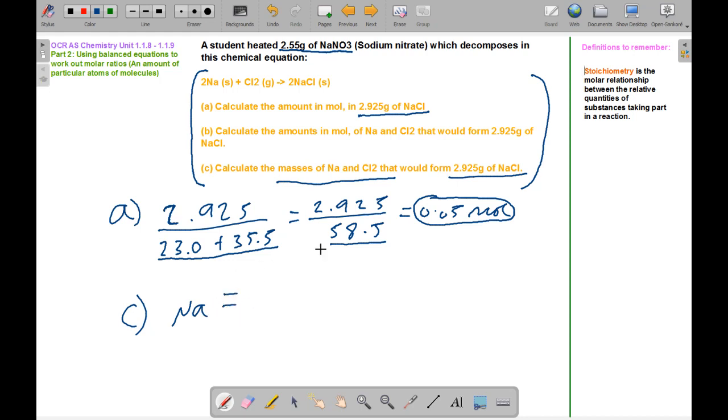For sodium, we'd have to arrange the mole formula. Moles equals mass over MR. This time it would be moles times MR, so I'll put mole times MR. Looking up on the periodic table, it would be 0.05 times 23 equals 1.15 grams.